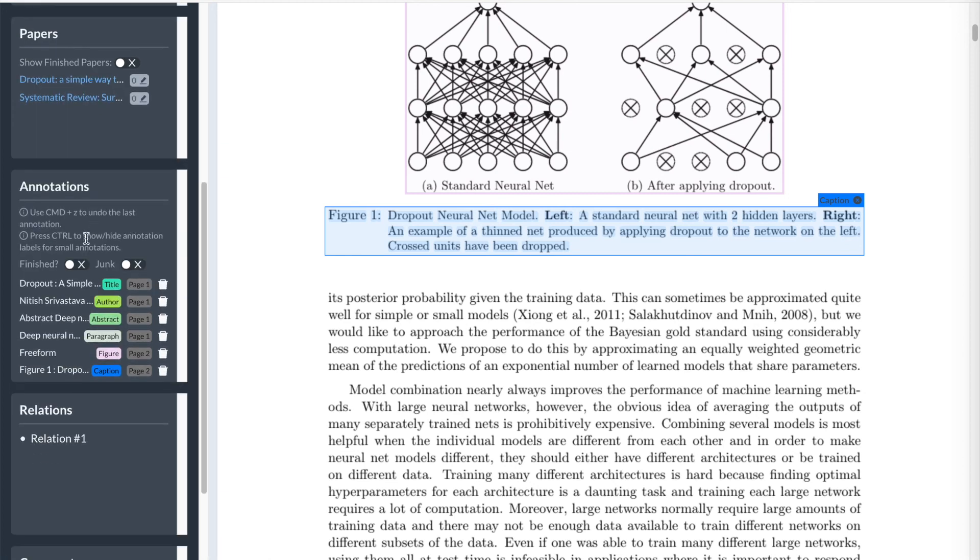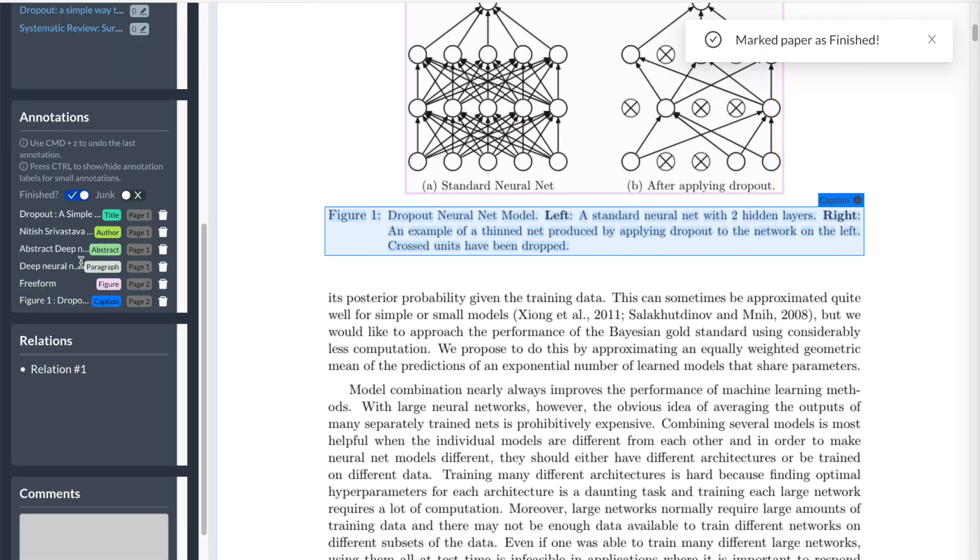You can mark the current PDF as finished and check the annotations for this PDF. Finally, annotators can also add comments for each PDF for additional notes during the labeling.